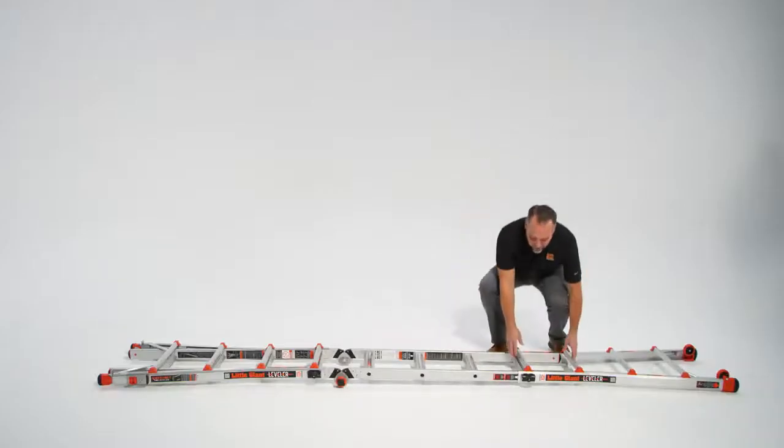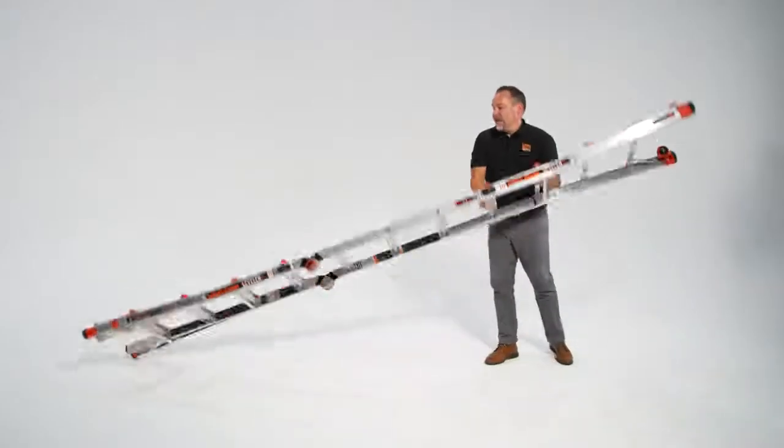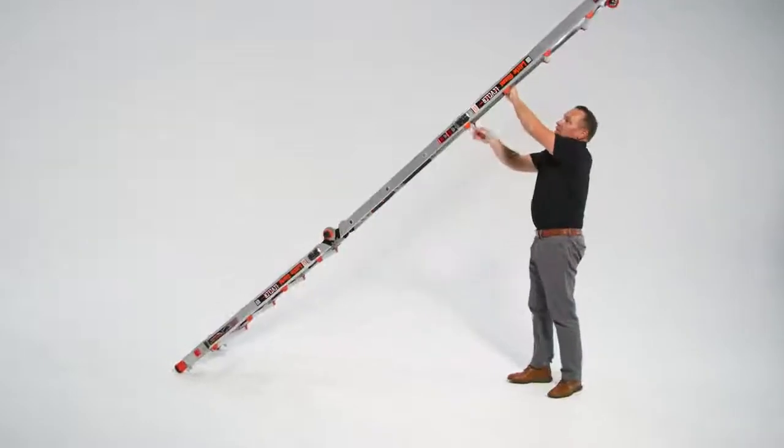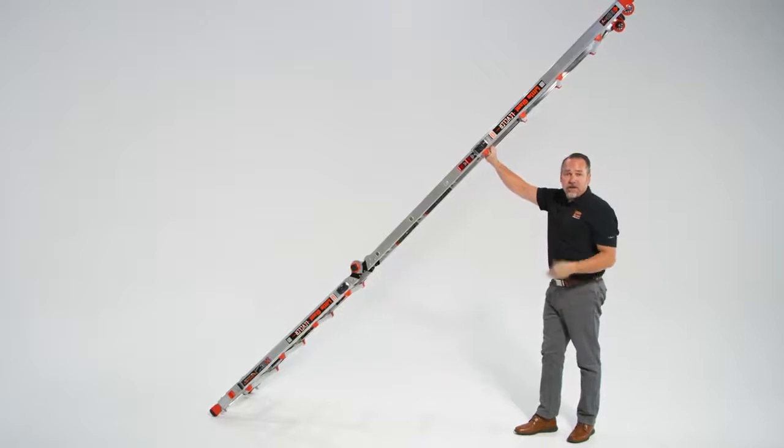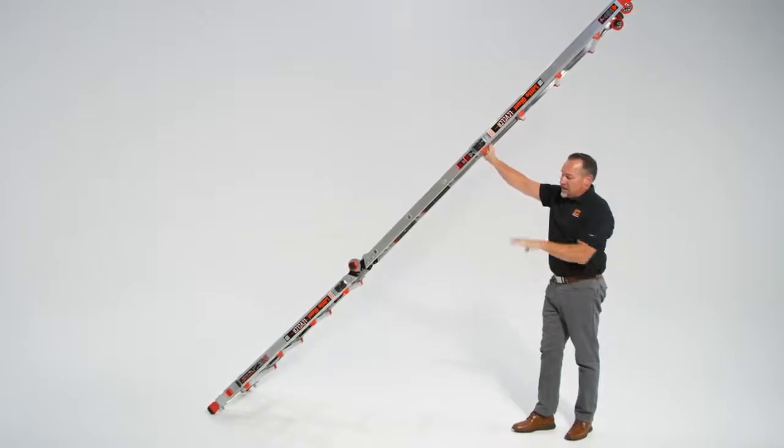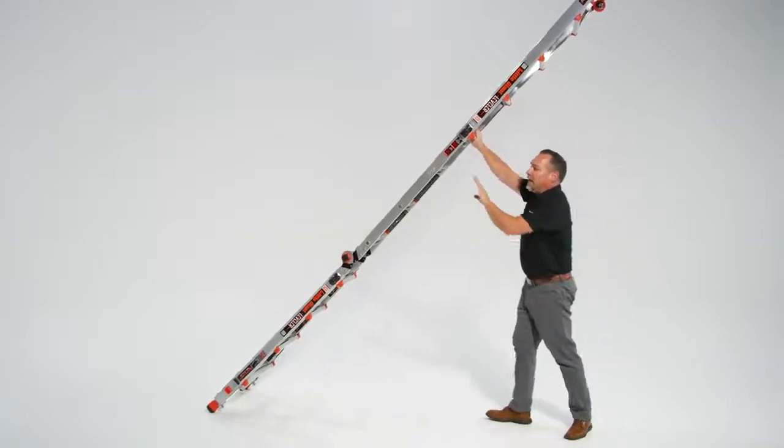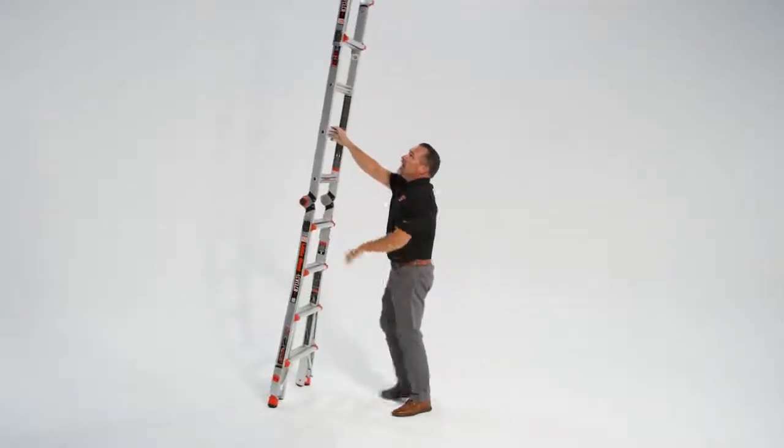Then we're going to turn the ladder 180 degrees so that I'm facing the rungs. This is where I'm going to foot the ladder down here at the bottom, against the foundation or a solid surface. And then again, hand over hand, raise the ladder up.